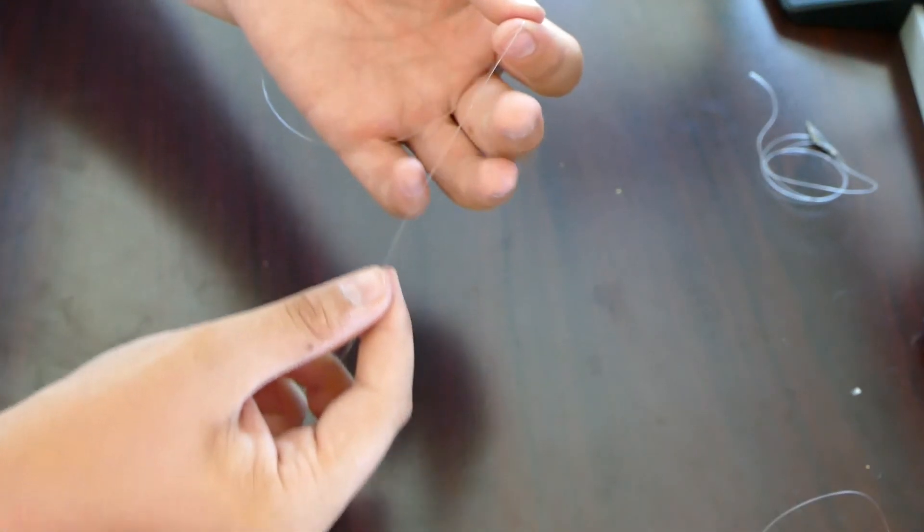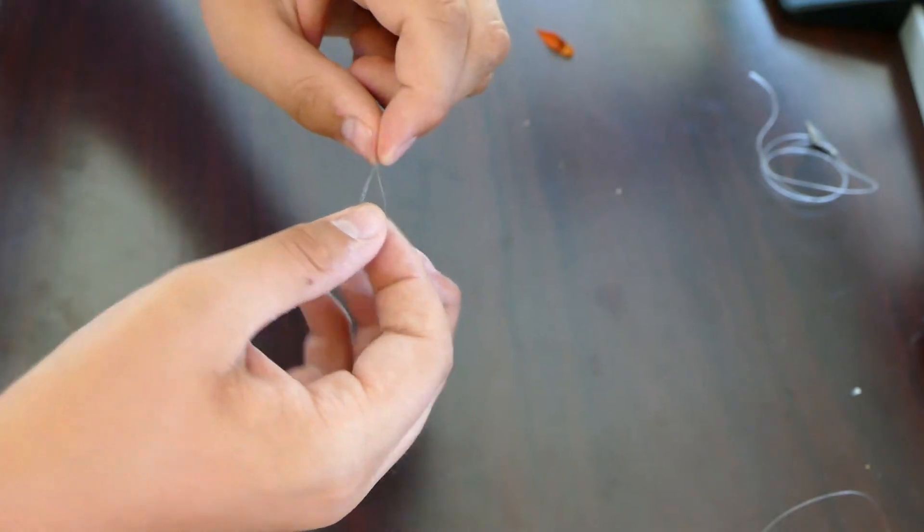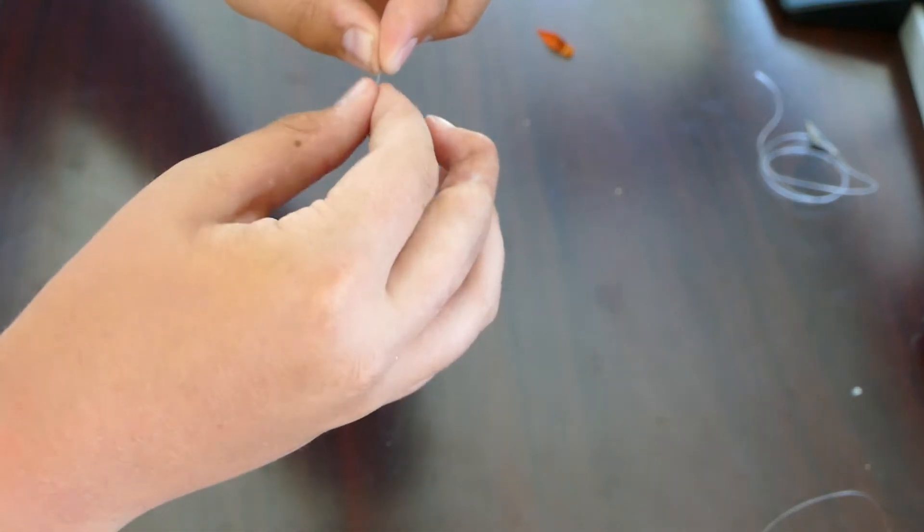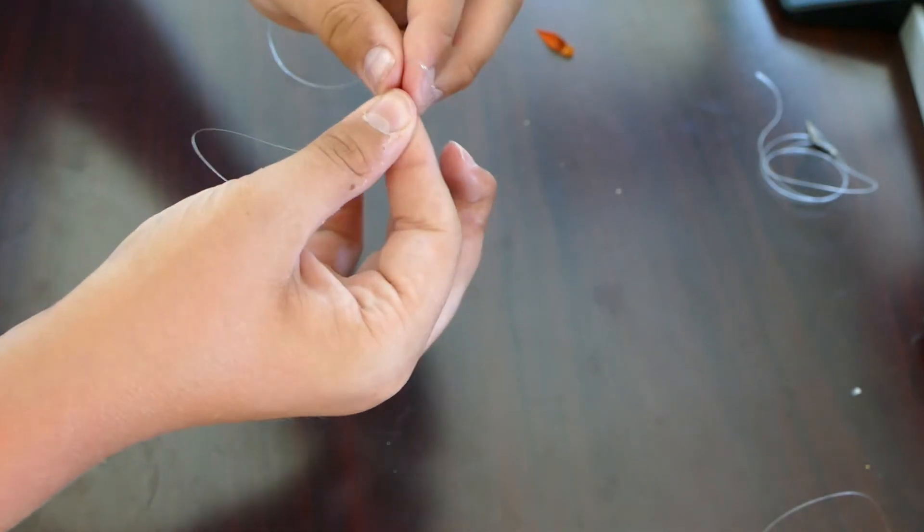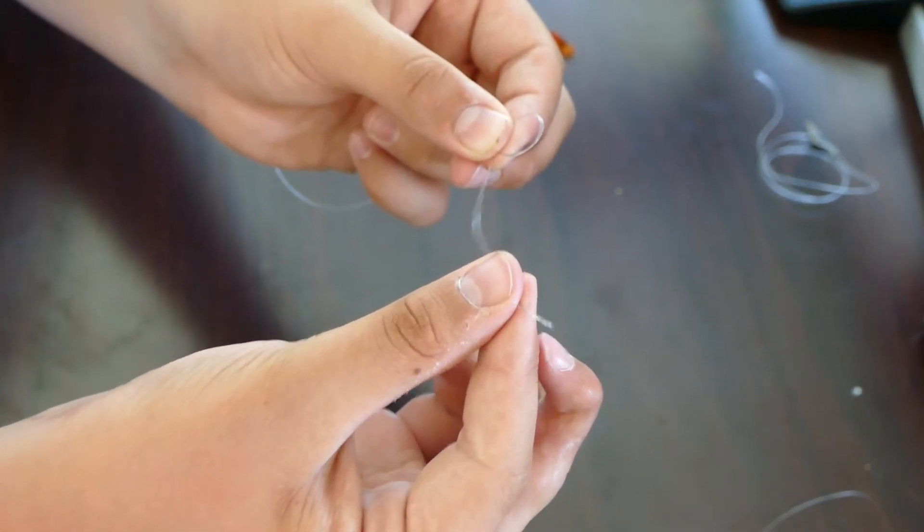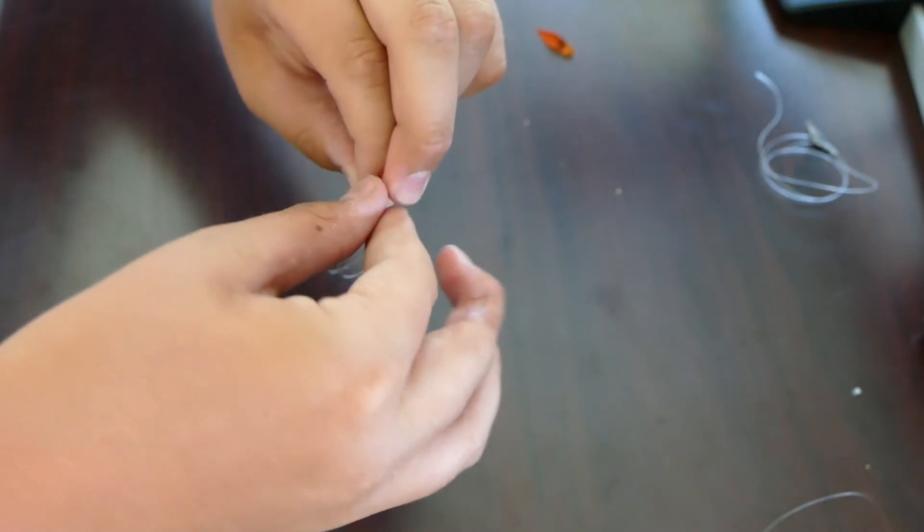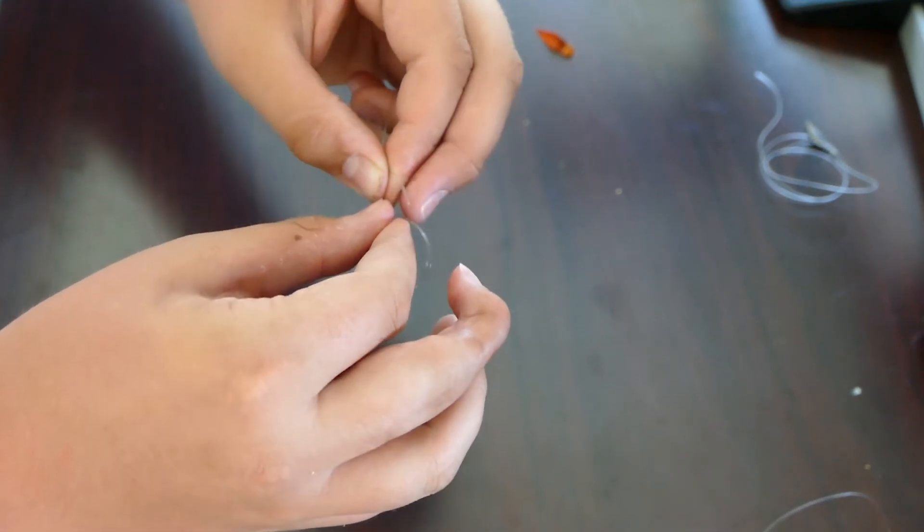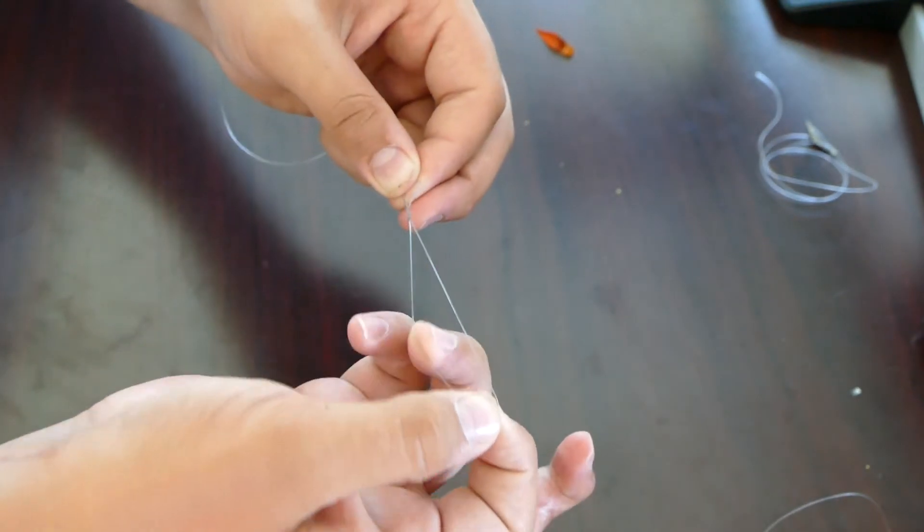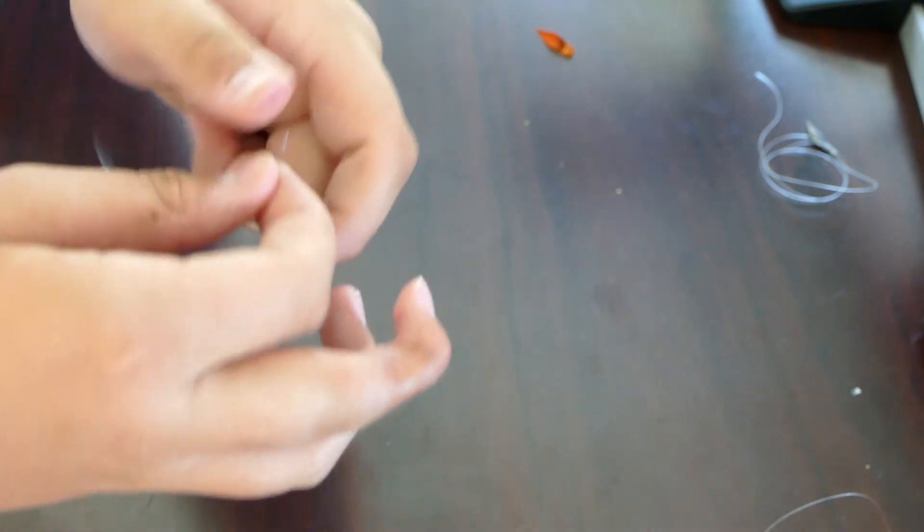And I'll tie a surgeon's loop on the bottom where I will put a weight. So we'll tie a surgeon's loop. You take the line, loop it over itself, put it through its own loop once, twice, and cinch it tight.